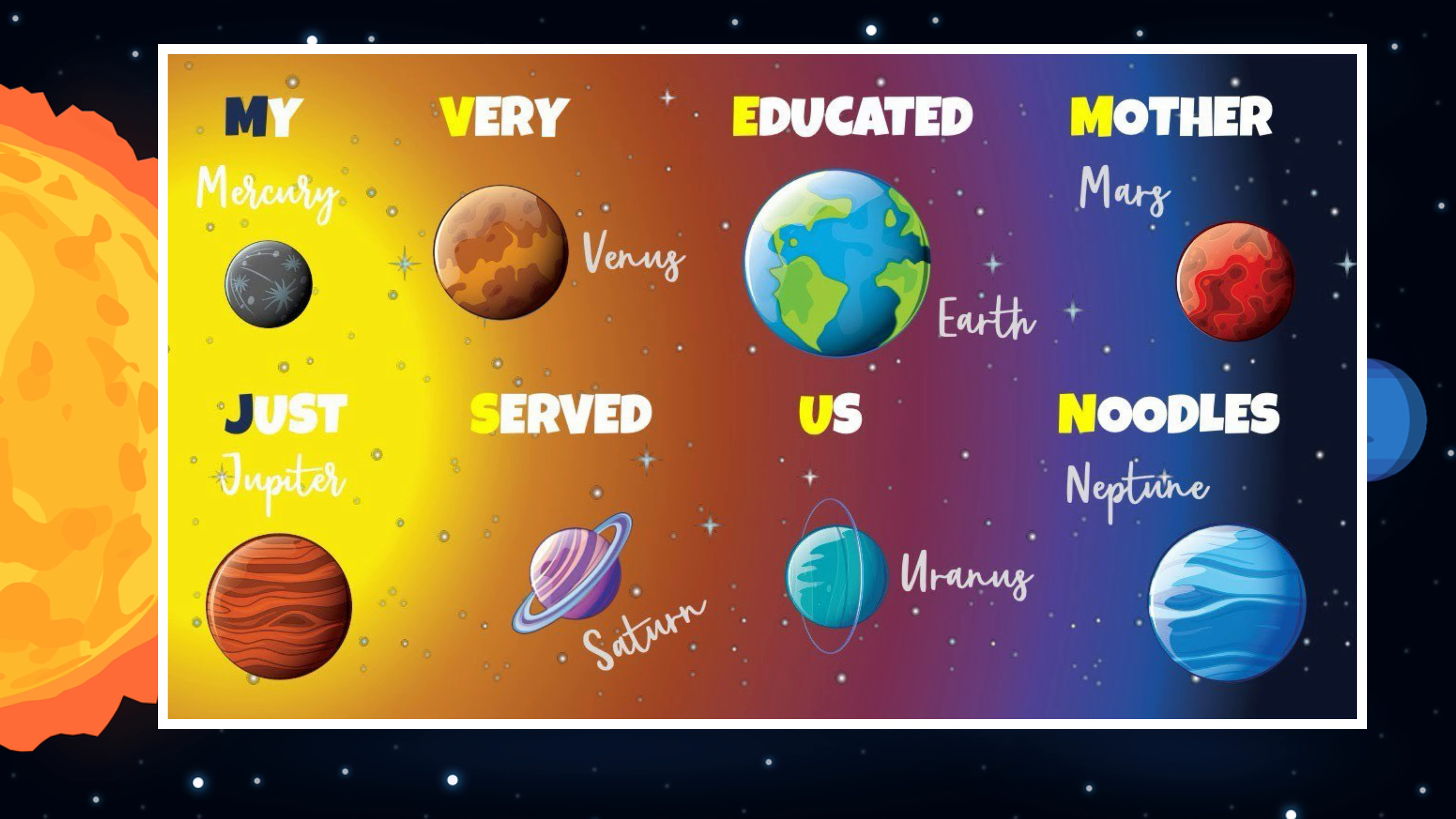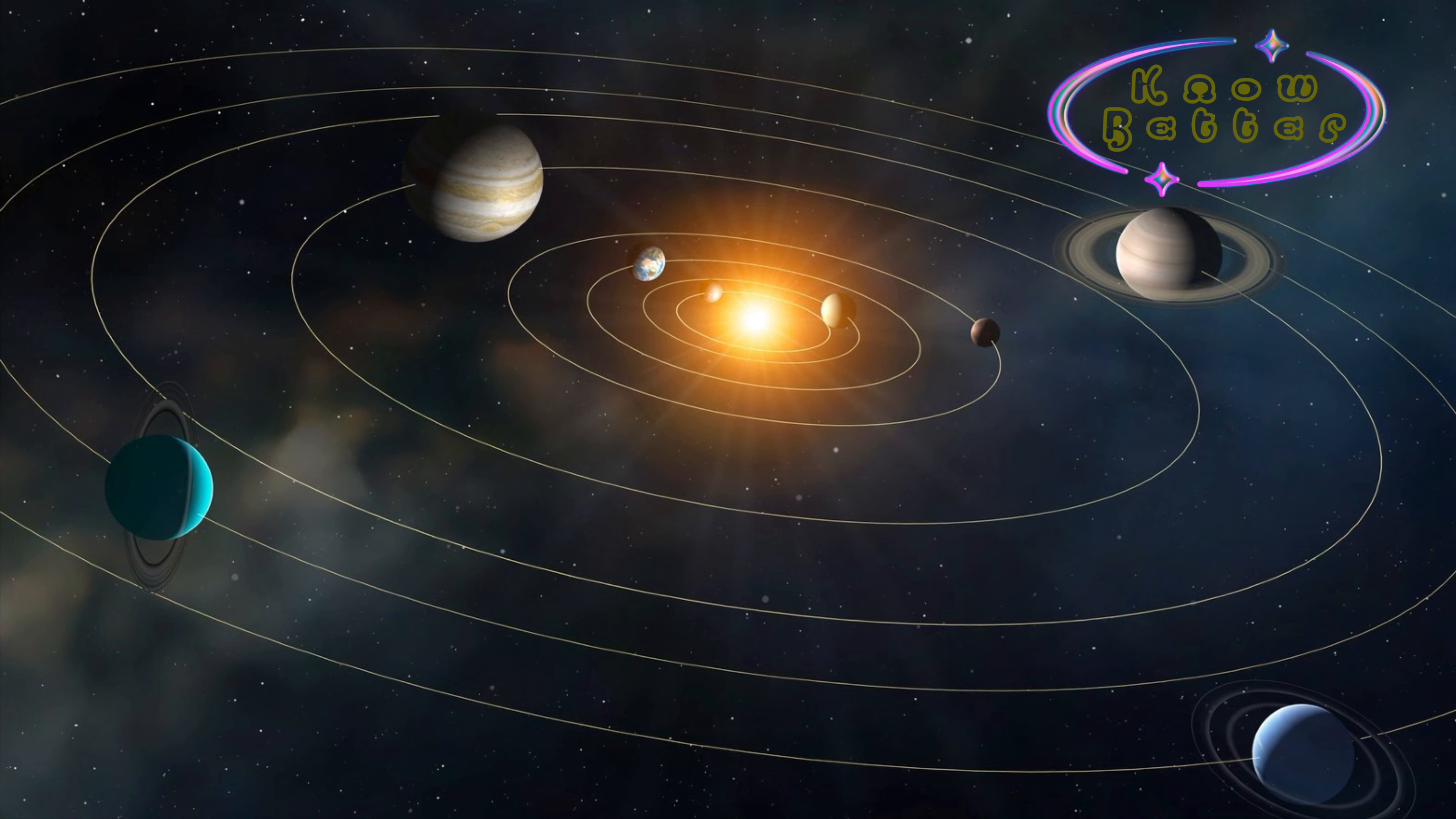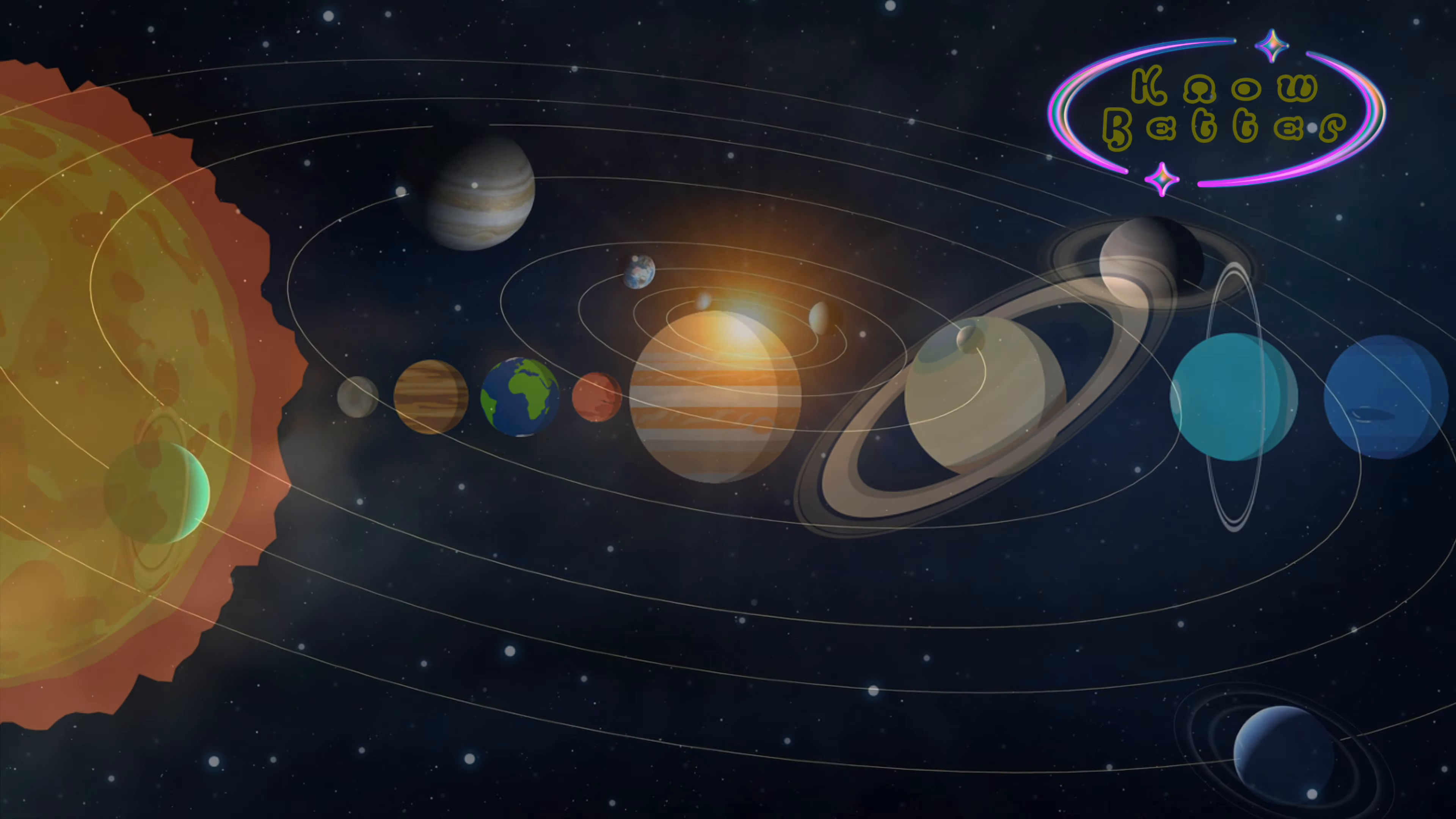Planets move around the Sun in a fixed path. It is an elongated path which are called orbits. Do you know, just a couple of years ago there were nine planets?